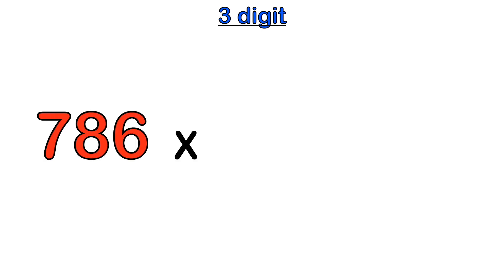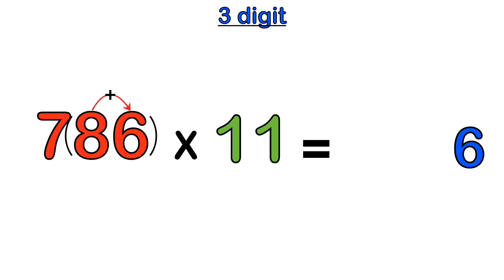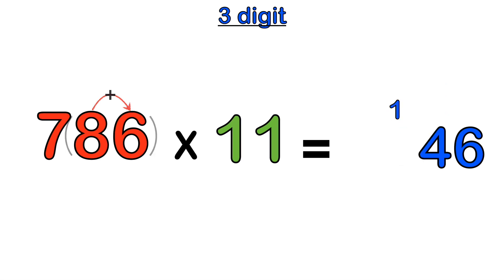Let's take a look at three digits — for instance, 786 times 11. We start with the last digit, which is six, and multiply it by the last one in 11 to get six. Then we move one space to the left and add the two adjacent numbers. We can only add two numbers at a time, so eight plus six gives us 14. We put that in the answer line, carrying the one from 14.